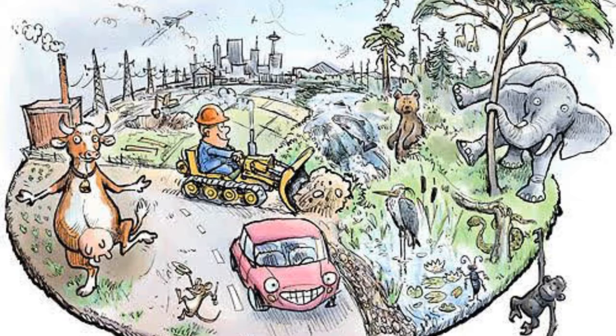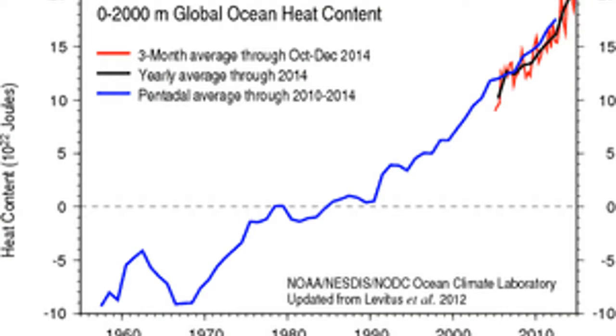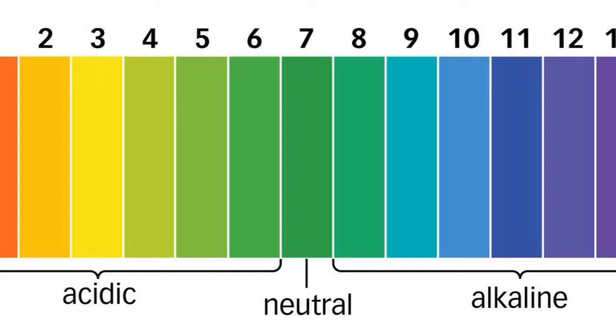There are many ways in which human consumption of natural resources affects our aquatic ecosystems. Two main points I will address are ocean heating and ocean acidity.